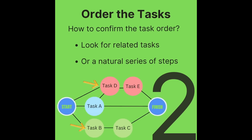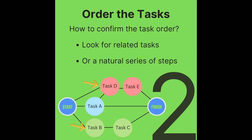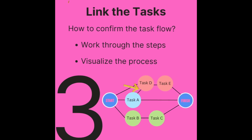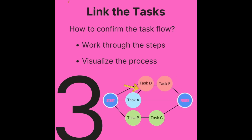Next, make sure you order them properly. Look for tasks that are either related — technical things with technical things — or a series of steps, something functional you have to do so you can do something technical. Link the tasks so they have a natural process flow, and look for those process flows that have crossover points. Visualizing the process will help you do this.